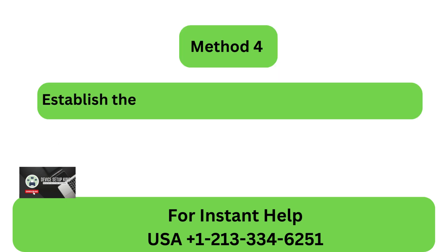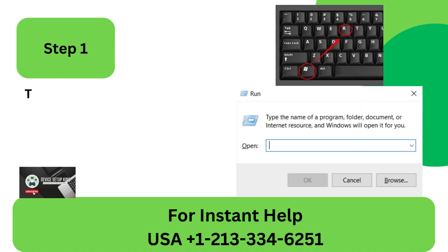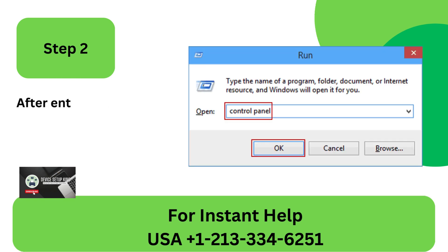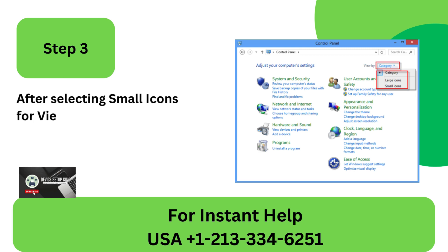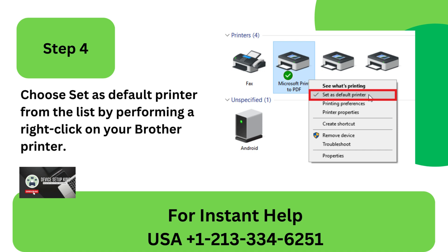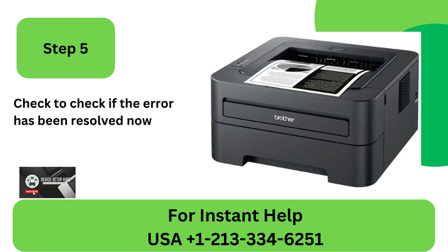Method 4: Establish the Brother Printer as the Primary Device. Step 1: The Run Dialog Box can be accessed by simultaneously pressing the Windows and R keys. Step 2: After entering Control Panel, click OK. Step 3: After selecting Small Icons for View, select Devices and Printer. Step 4: Choose Set as Default Printer from the list by performing a right-click on your Brother Printer. Step 5: Check to see if the error has been resolved now.